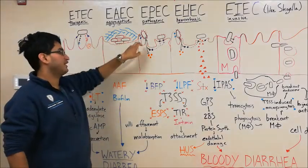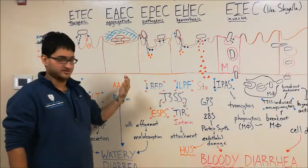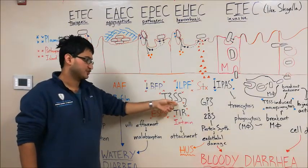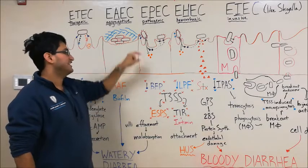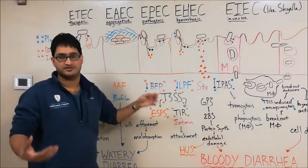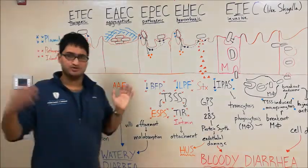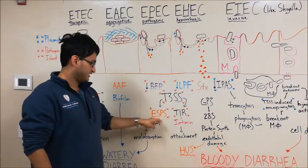Once the EPEC is bound to the enterocyte via BFP, it's then going to use its type 3 secretion system, or T3SS for short, to inject proteins inside the enterocyte. Note that some sources also call this an injectisome, since it injects things into the cell. It's going to inject two broad kinds of proteins: ESPs and TIR.